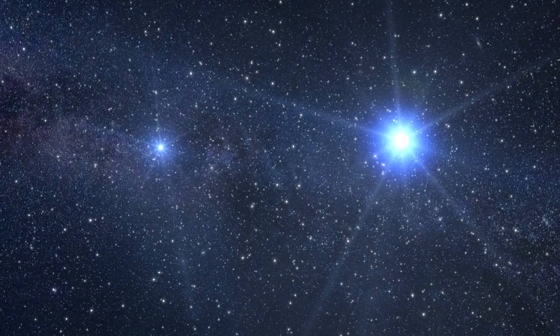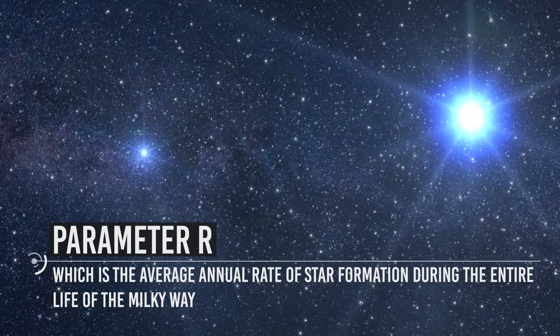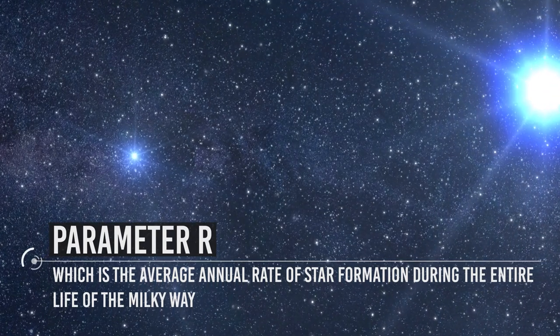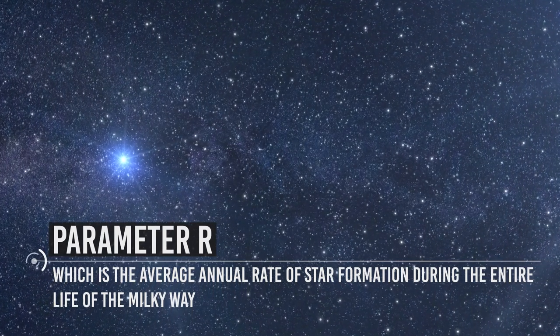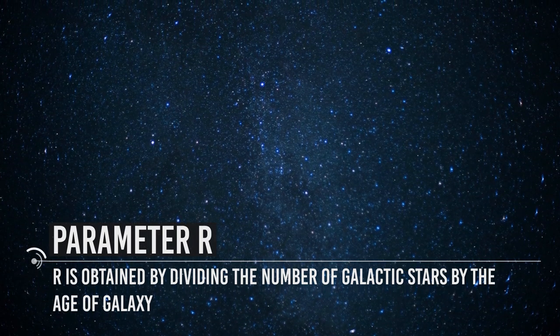In an alternative writing of Drake's equation, instead of N star, R appears, which is the average annual rate of star formation during the entire life of the Milky Way. R is obtained by dividing the number of galactic stars by the age of the galaxy.